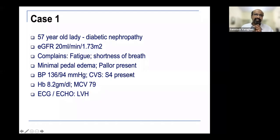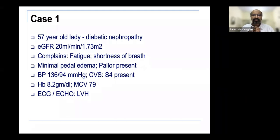This is a typical patient — a 57-year-old lady with diabetic nephropathy and CKD stage four (GFR 20 mL/min), shortness of breath with minimal pedal edema and pallor. Blood pressures are slightly elevated, there's a fourth heart sound indicating LVH, anemia with MCV of 79, and echo-confirmed LVH.